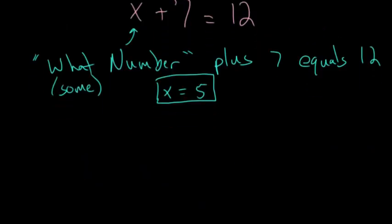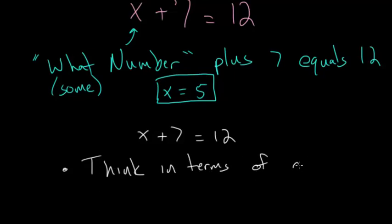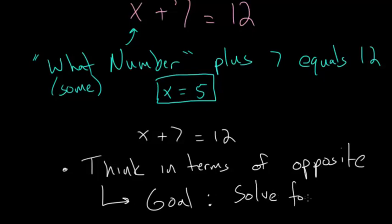Let's rewrite this down below. We have x plus seven equals 12. What I would recommend is to think in terms of opposites. Effectively, our goal here is to solve for x. We want to get x equals something. We have to get x by itself on the same side of the equation.